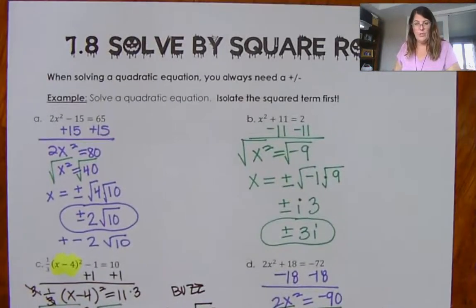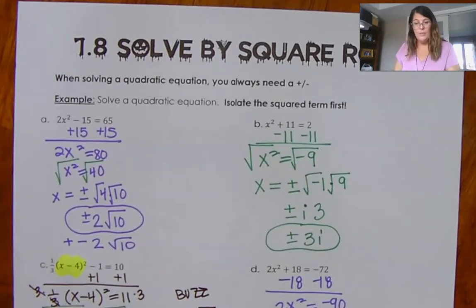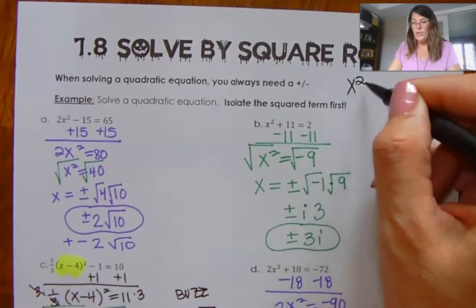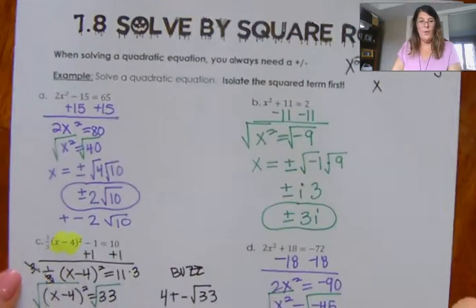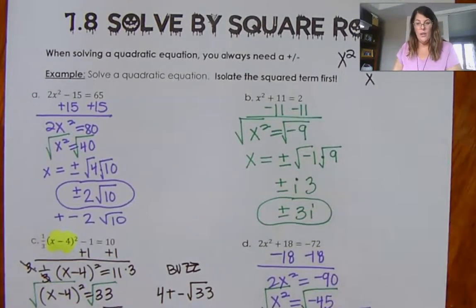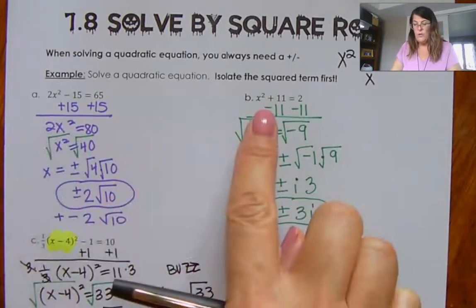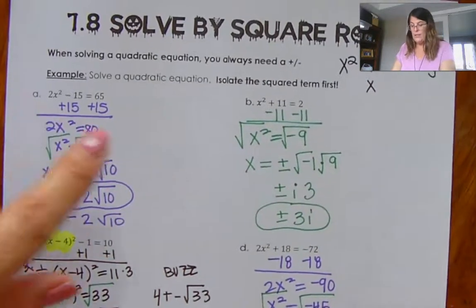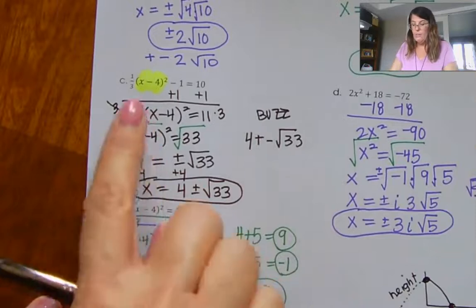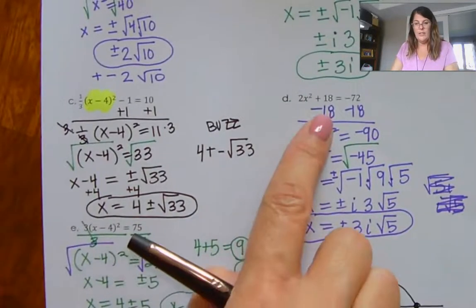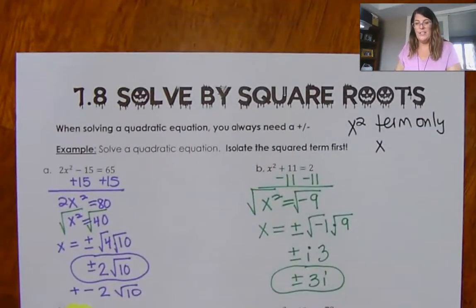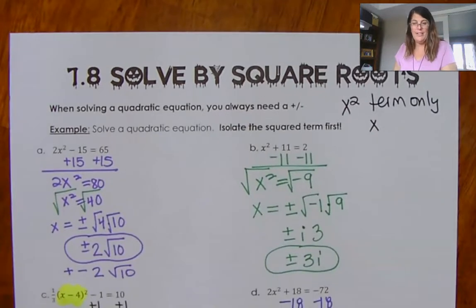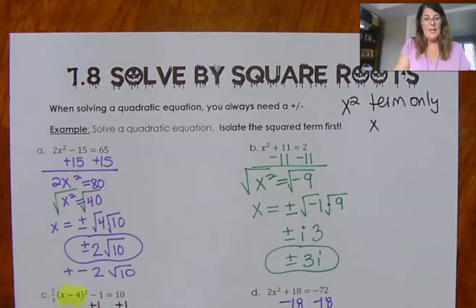I hope you're in a good place for solving by square roots. Remember, each of these problems had an x² term only — they did not have a linear x. When you look at each of these, you know you can use the square root method because it was x squared, or the whole binomial was squared. That's important as we start to determine which method to use. Eventually you'll have all these methods and need to know which one to use when.